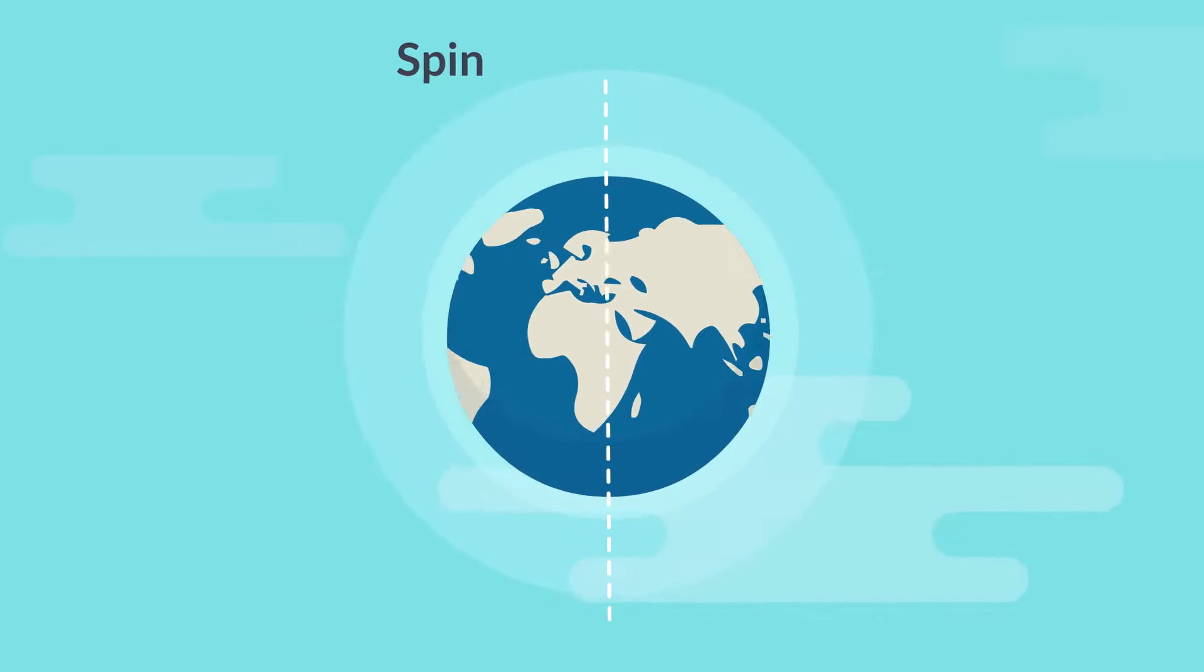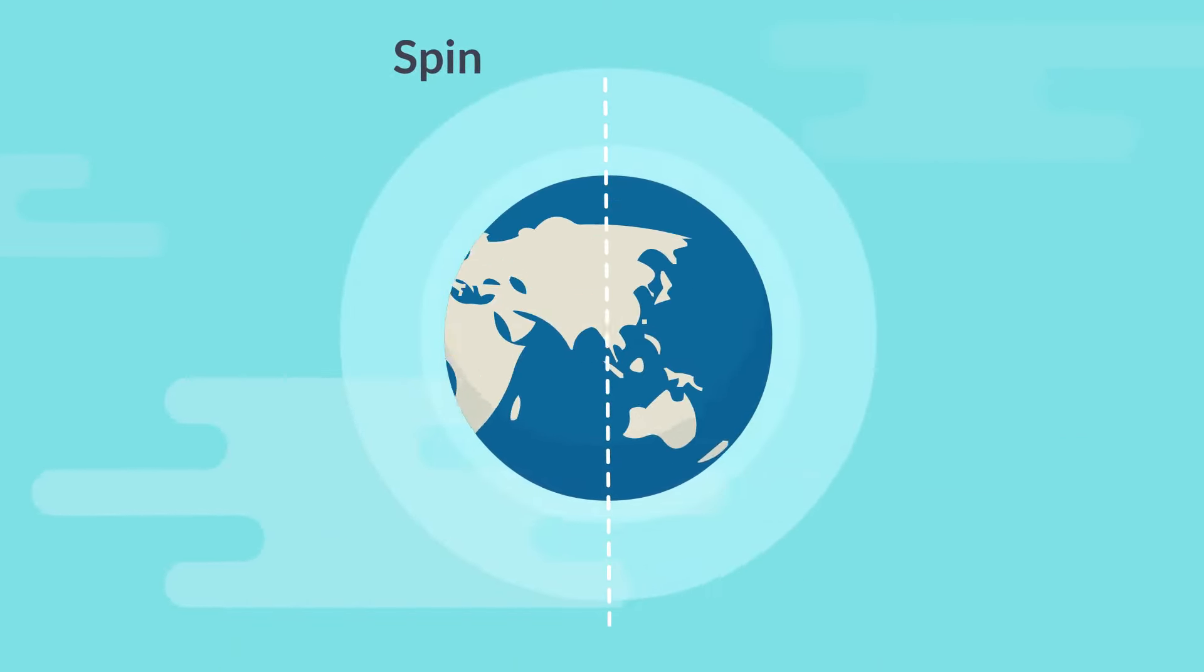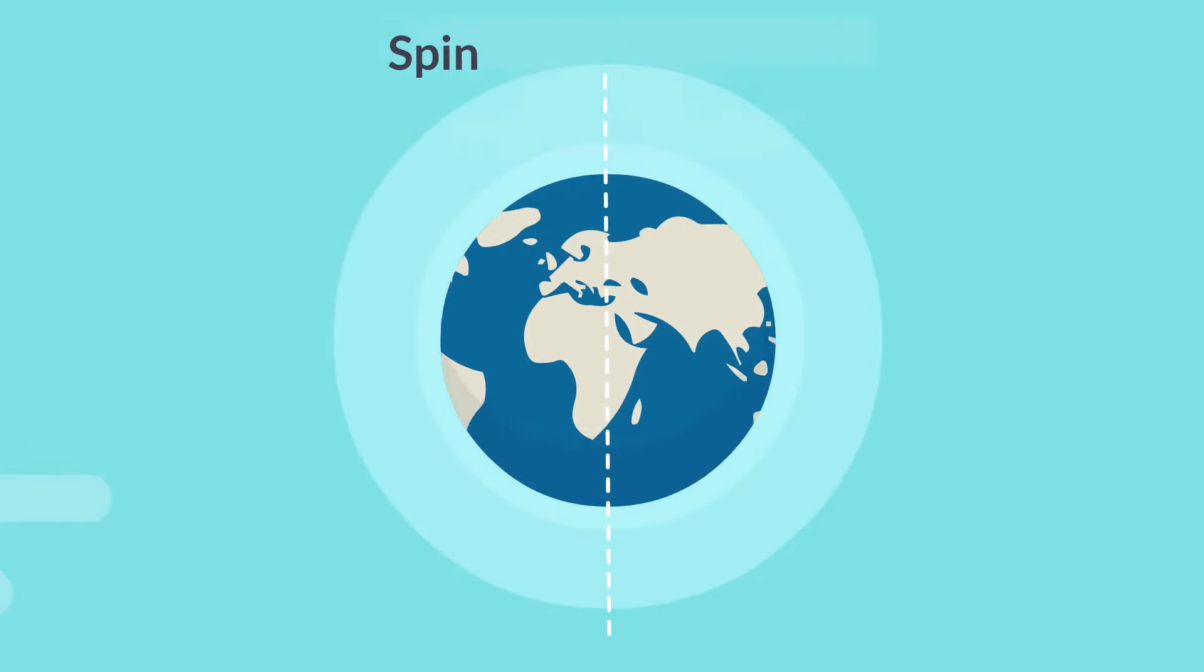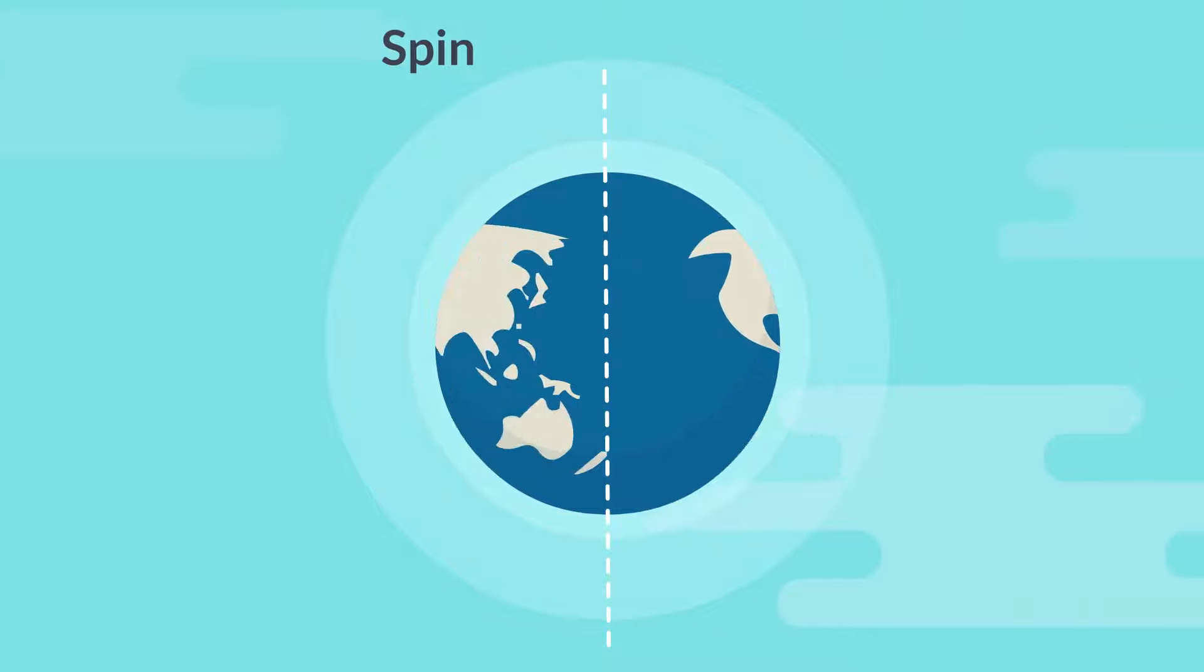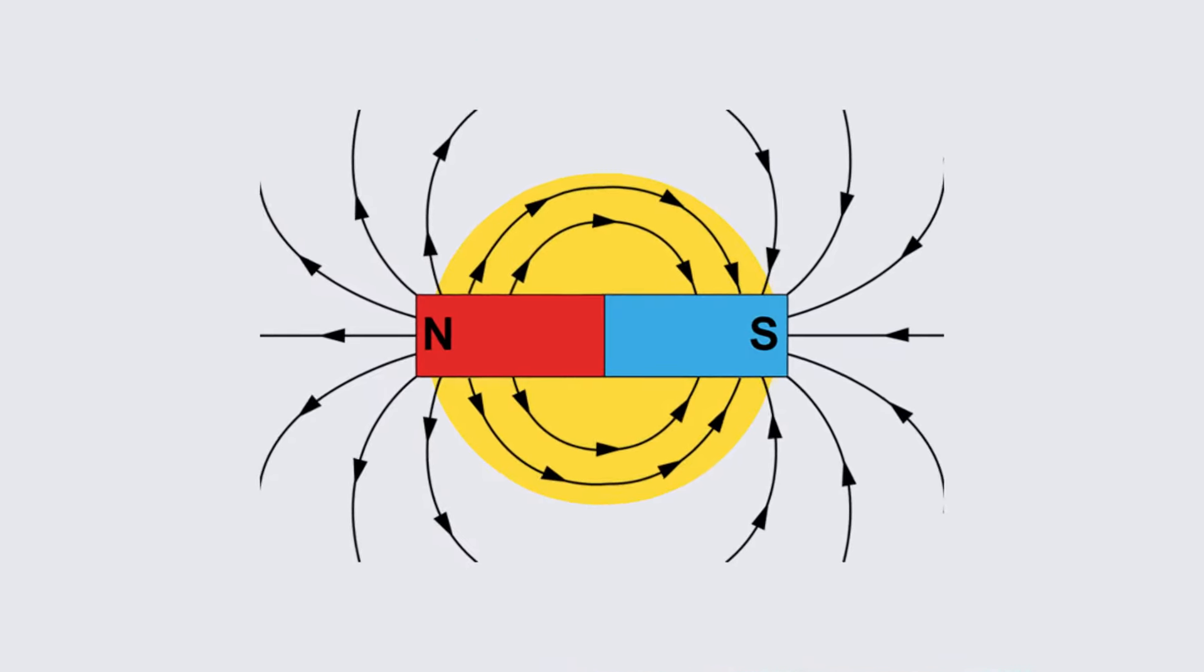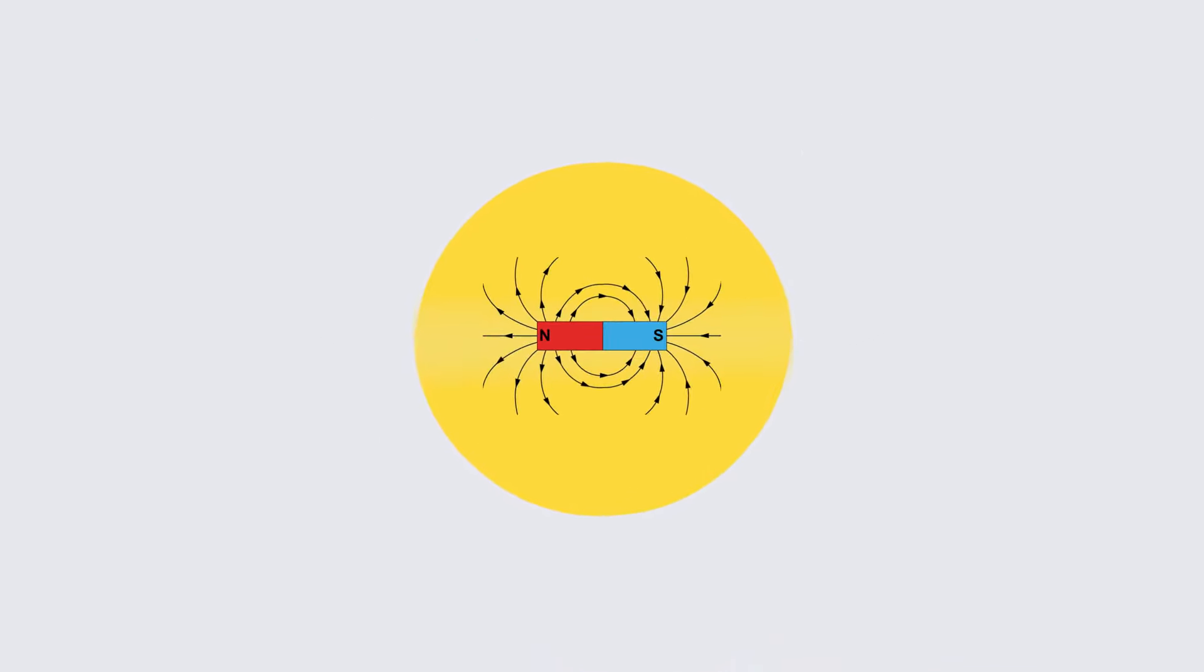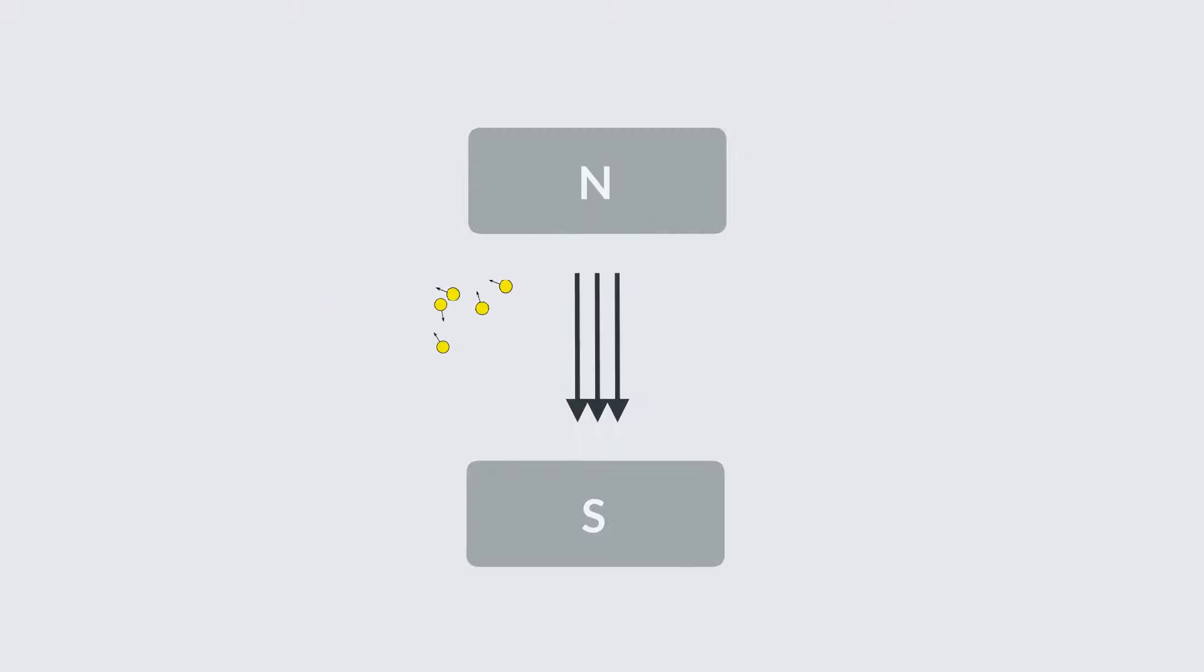Spin is a fundamental property of a particle, and can be thought of as similar to the angular momentum of a sphere rotating on its axis, although the particle is not literally spinning. This has the effect of essentially creating a bar magnet within the particle. Spin can be measured by observing the direction that a particle is deflected when passing through a magnetic field.